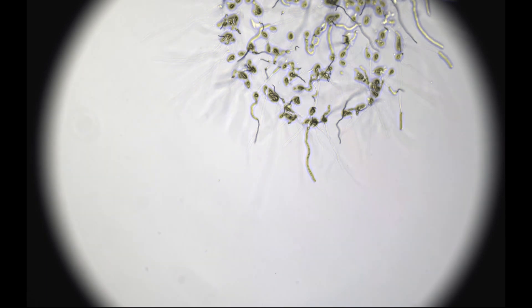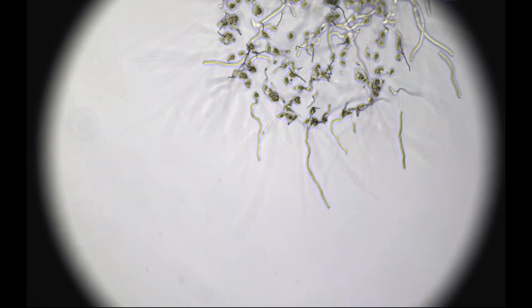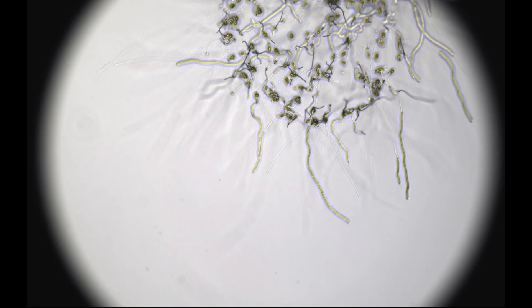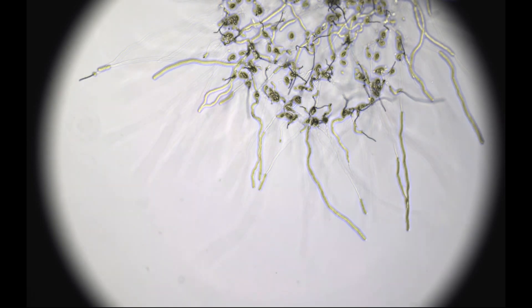Fungi have many different ways of dispersing them. Cladosporium spores are wind dispersed. This is how they can get inside houses as mentioned in a previous video.